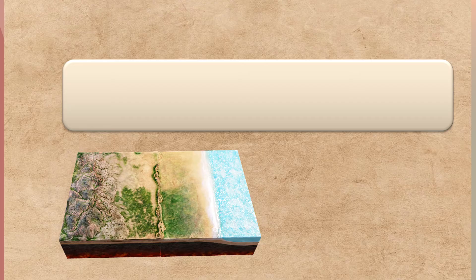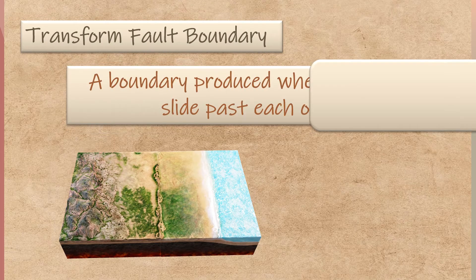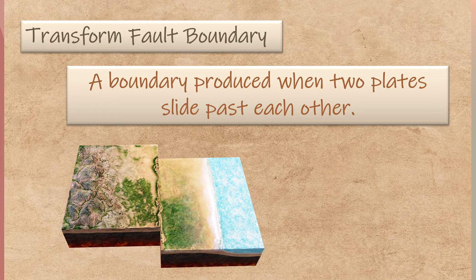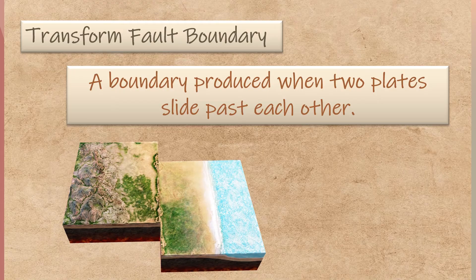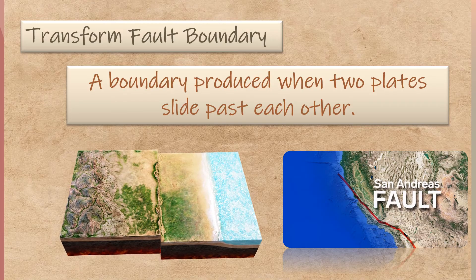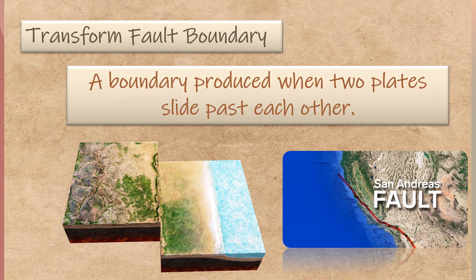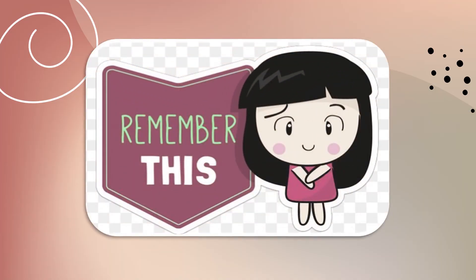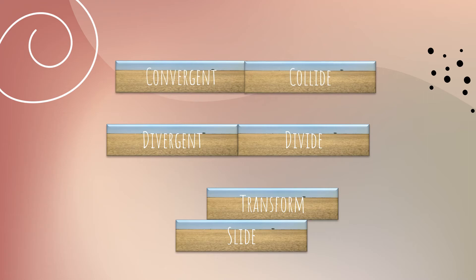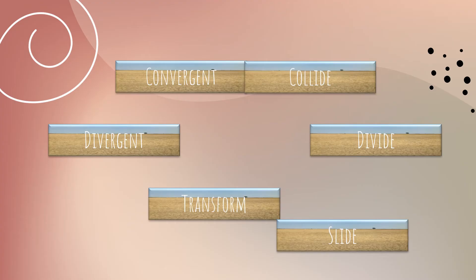And finally, the third type of plate boundary is called the transform fault boundary. It occurs when two plates slide past each other horizontally. A well-known transform plate boundary is the San Andreas Fault, which is responsible for many of California's earthquakes. Learners, always remember: convergent — collide; divergent — divide; and transform fault boundary — slide.